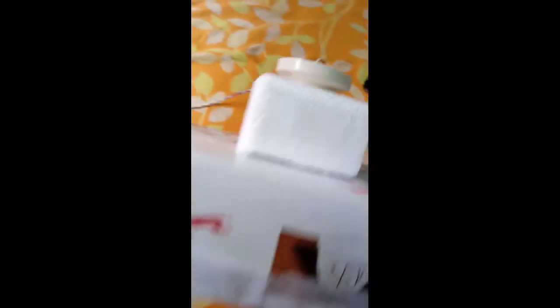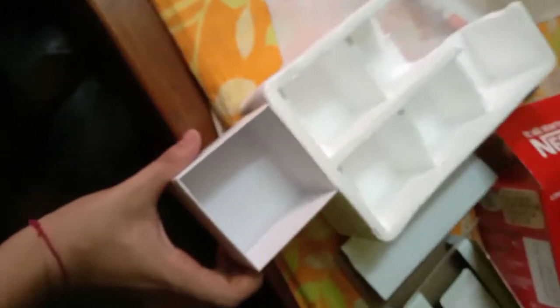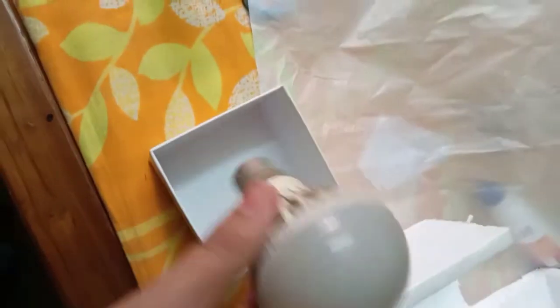This is the back side of this light and this was the thermocol box where the cups were kept. And here I have cut a box like this. See, this was a normal box. I cut a box similar to this and kept the holder.